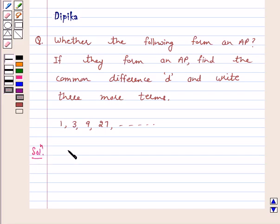Our given list of numbers is 1, 3, 9, 27, and so on. We have A2 minus A1 equals 3 minus 1, which equals 2.